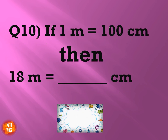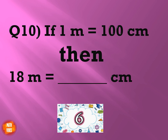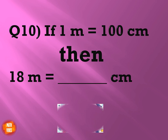And the next question is: if 1 meter is 100 centimeters, then 18 meters will be equal to how much? Time starts now. And the right answer is 1,800 centimeters.